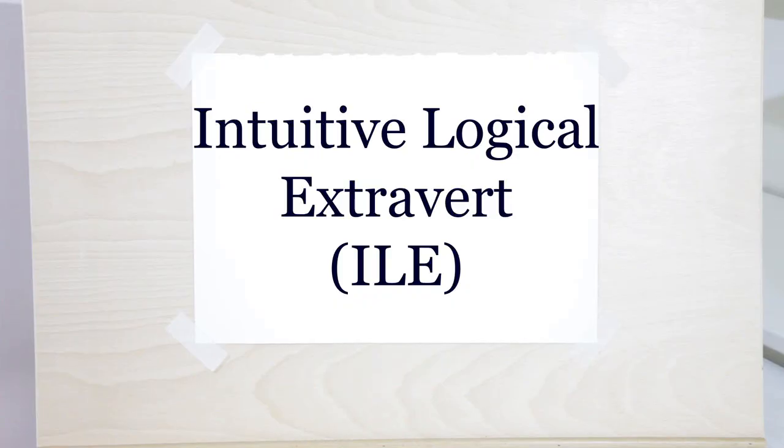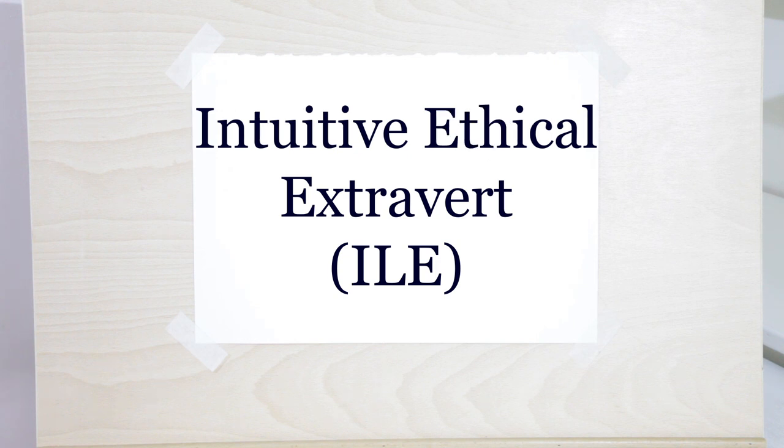The two types with role SE are the ILE and the IEE. In the case of the role function, there won't be much difference in how the two types exhibit it, as it is blocked with the vulnerable function, which is a blind spot and therefore does not add any flavoring to the aspect in the role.